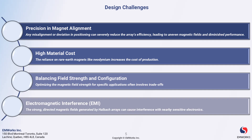Next, we have high material costs. Many halbach arrays rely on rare earth magnets like neodymium, which can drive up production costs. This reliance on expensive materials can be a barrier to widespread adoption, especially in cost-sensitive applications. Another challenge is balancing field strength and configuration.